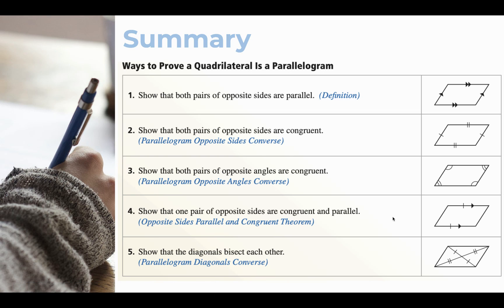What's different about number four? Well, for the other conditions you have to know both pairs of opposite sides or both pairs of opposite angles. With number four, you can just know one pair of opposite sides, but you have to know two things about that one pair. If you know that one pair of opposite sides is both parallel and congruent, that is enough to conclude that this must be a parallelogram.